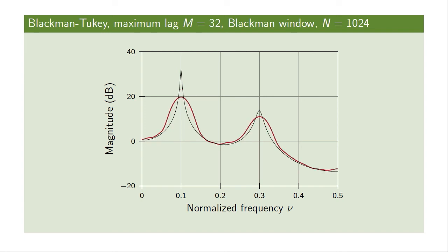Here is the same estimate applied with a maximum lag of 32 and a Blackman window. Making the window shorter in the time domain widens it in the frequency domain, giving averaging over more frequencies, which shows improved variance where the power spectrum estimate varies slowly, at the expense of poorer spectral resolution — manifested as widening of the spectral peak. We could also go in the other direction and make the window longer to get better spectral resolution.